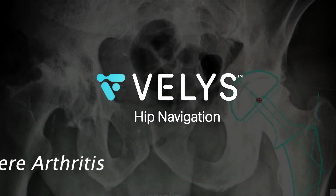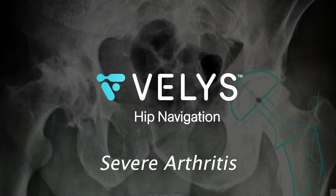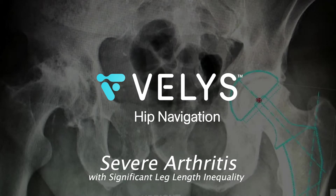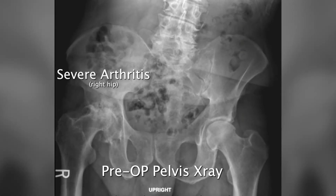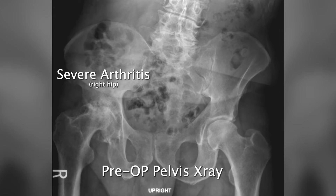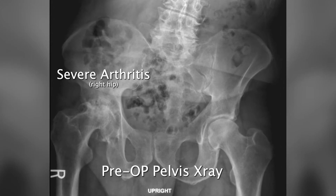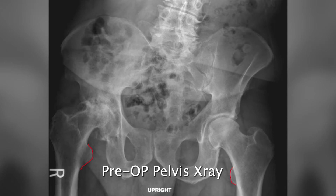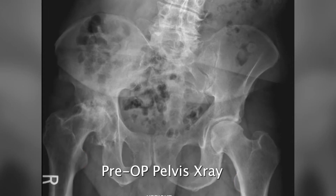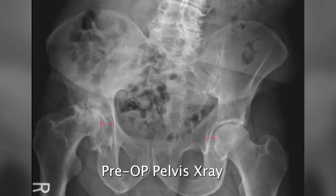VELUS Hip Navigation for a patient with severe arthritis with significant leg length inequality. The case starts with first looking at the AP pelvis to assess for leg length inequality. You can see from the x-ray that the patient's right leg is significantly shortened radiographically. This case also demonstrates pathologic offset of the patient's femoral head relative to the acetabulum — the femoral head is lateral and superior to its native position.